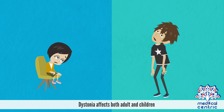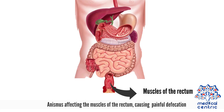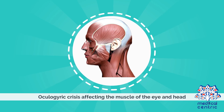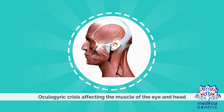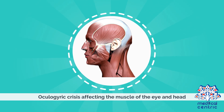Dystonia affects both adults and children. Some common dystonias are anismus, affecting the muscles of the rectum, causing painful defecation; oculogyric crisis, affecting the muscles of the eye and head; blepharospasm, affecting the muscles around the eye, resulting in rapid blinking of the eyes.